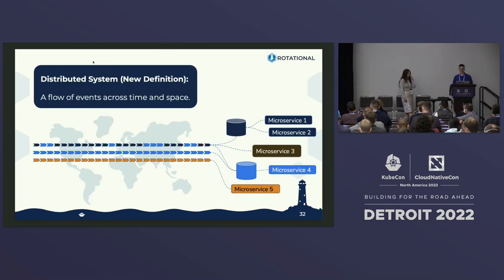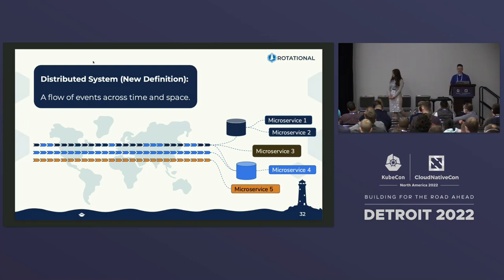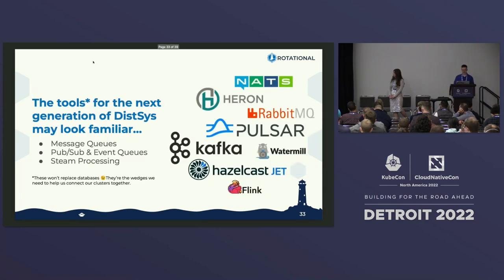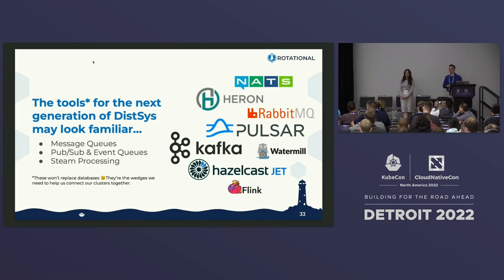Here's our new definition: a flow of events across time and space. Think of it as a more microservice-oriented approach — all the data being generated across the world in terms of events that are ordered in time, pushed to microservices, which push to other microservices and queues. Message queuing, PubSub, stream processing — we think these are going to expand in popularity because the best way to send data around the world is to think about it as events, not in traditional database format.